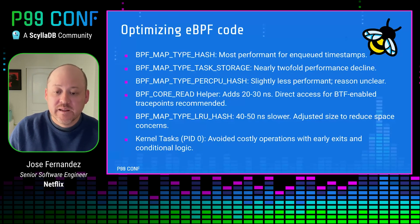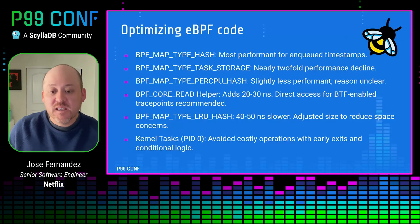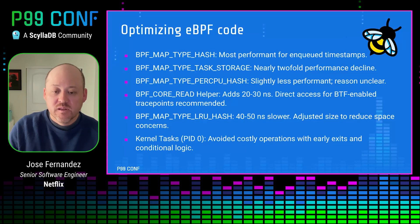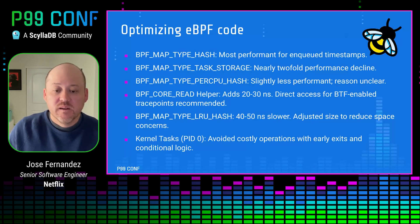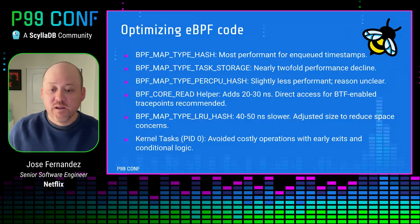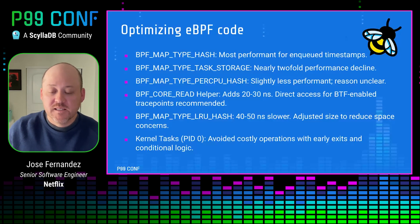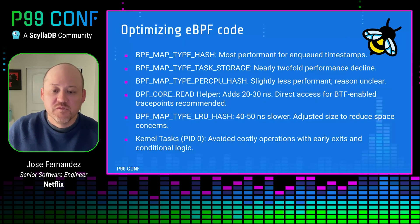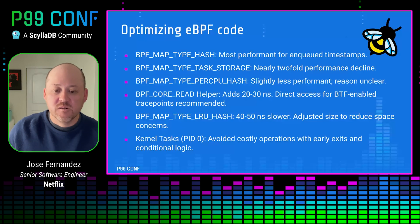The BPF core read helper adds about 20 to 30 nanoseconds per invocation. We were originally using it thinking we needed to, but in the case of raw tracepoints — those eBPF hooks that start with TP_BTF — it is safe and more efficient to access the task struct members directly. Also, the sched_switch, sched_wakeup, and sched_wakeup_new hooks are all triggered for kernel tasks, which you can identify because their PID is zero. We found that monitoring these tasks was unnecessary since we're not trying to detect noisy neighbors due to the kernel, so we implemented several early exit conditions to prevent costly operations like accessing eBPF maps.